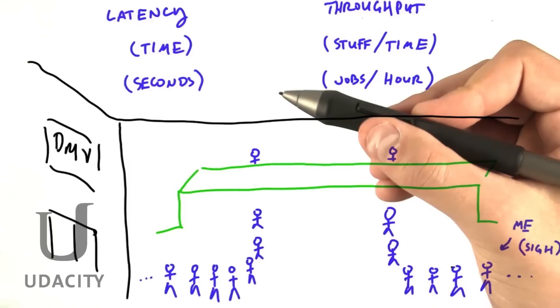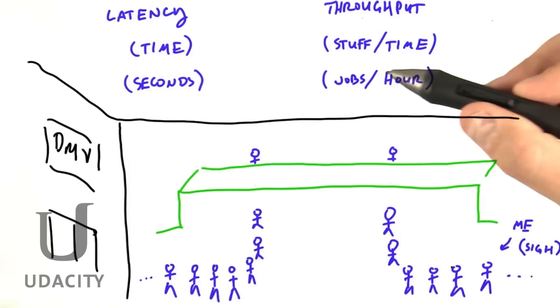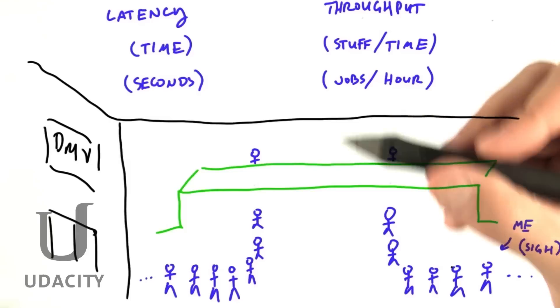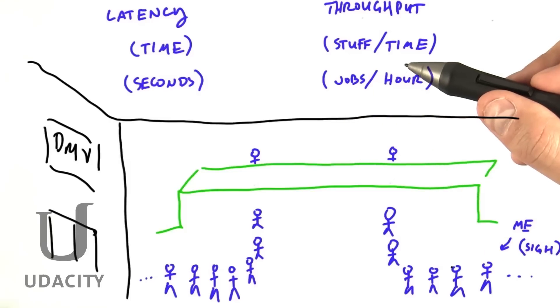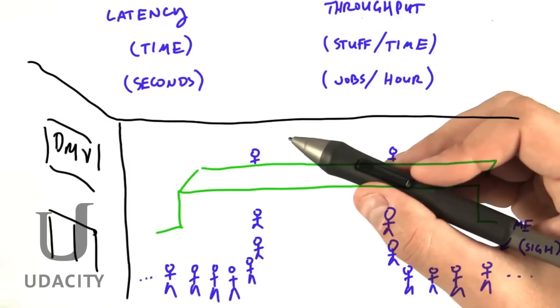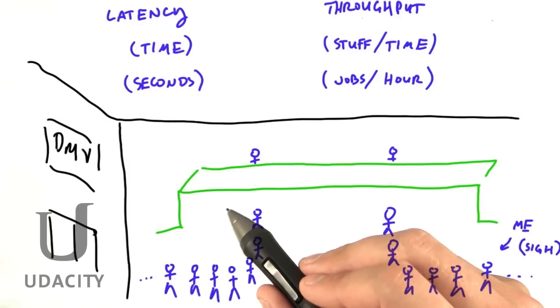The reason this happens is because your goals are not aligned with the DMV's goals. Your goal is to optimize for latency. You want to spend as little time in the DMV as possible. Instead, however, the DMV optimizes for throughput, specifically the number of customers they serve per day.